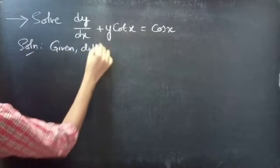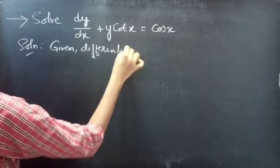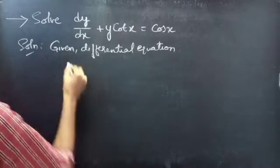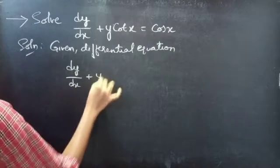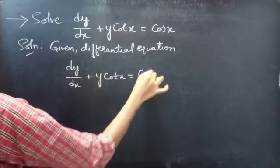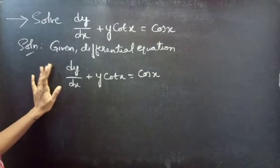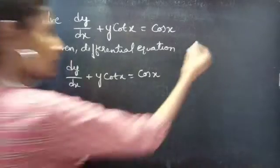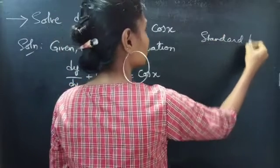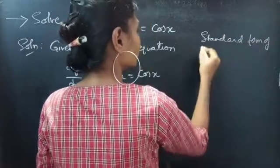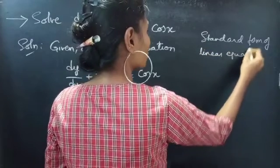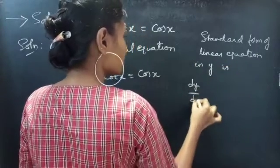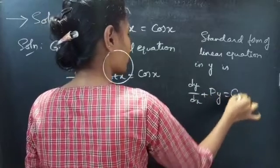Given differential equation: dy/dx plus y cot x equals to cos x, which is a linear equation in y. This is the standard form of linear equation. We know that the standard form of linear equation is dy/dx plus p into y equals to q.